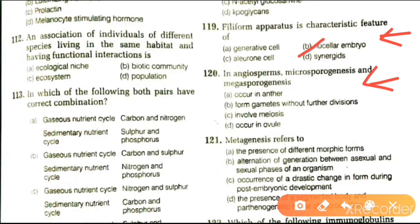Next question: in angiosperms, microsporogenesis and megasporogenesis occur in the anther. They form gametes without further division and involve meiosis. In angiosperms, both megasporogenesis and microsporogenesis occur in the anther.